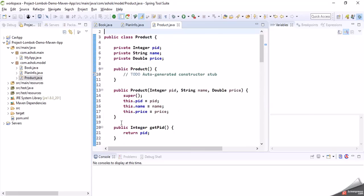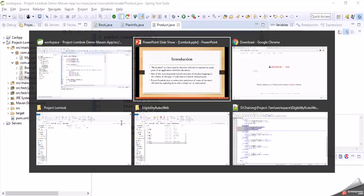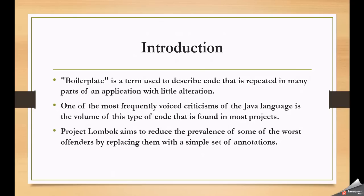If we observe these three model classes, they have a common piece of logic — common lines of code such as setter and getter methods for variables, default constructors, parameterized constructors, equals method, hashCode method, and toString method. This code can also be called boilerplate code in our Java applications. Instead of writing that much boilerplate code, we can replace it using Project Lombok. Project Lombok's main aim is to reduce boilerplate code in Java applications, and it provides a simple set of annotations for us.